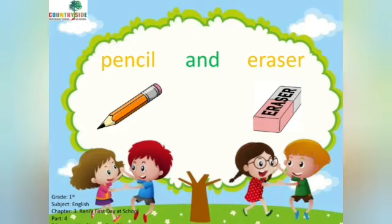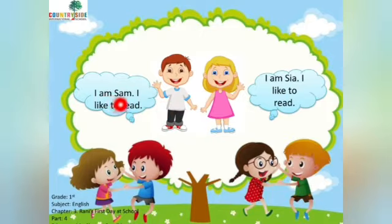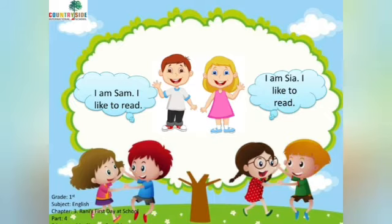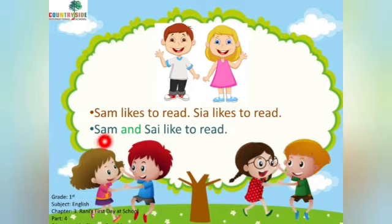This is a boy named Sam and this is a girl named Sia. Sam says 'I am Sam, I like to read,' and Sia says 'I am Sia, I like to read.' Now how can we join these two sentences? Sam likes to read and Sia likes to read, so we can say: Sam and Sia like to read.